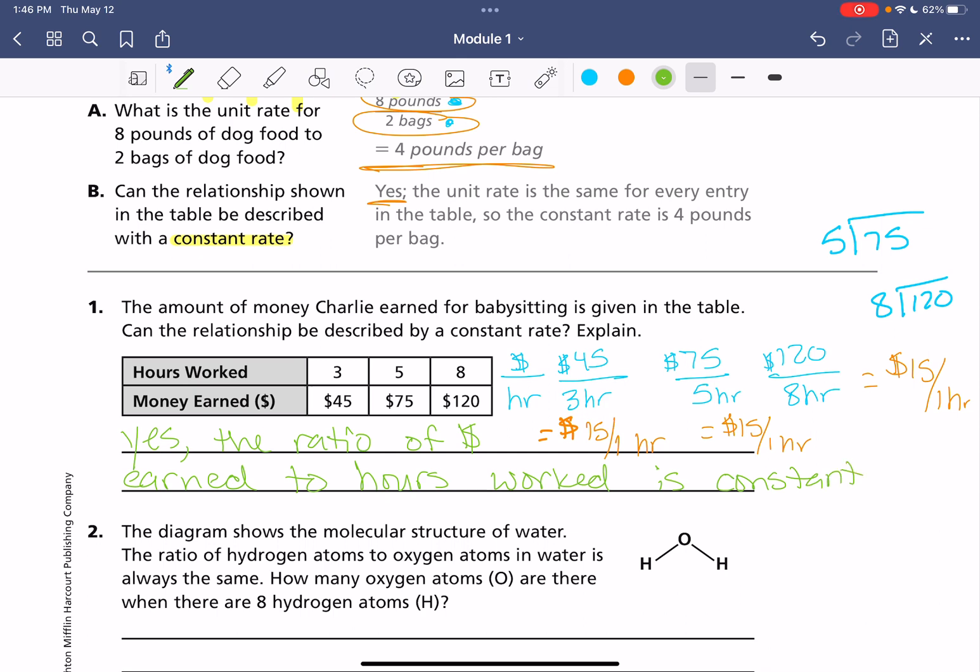For every part of our table that's given, it is the same amount. And that is that, $15 per hour.